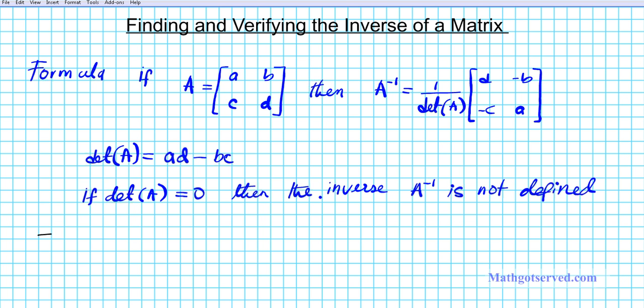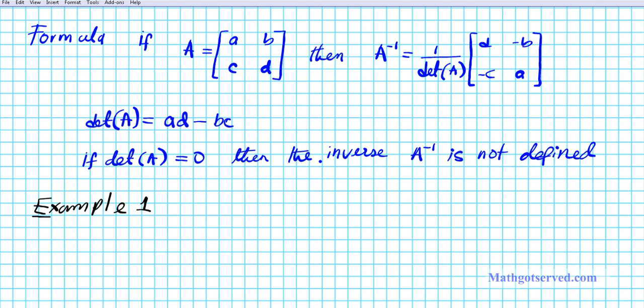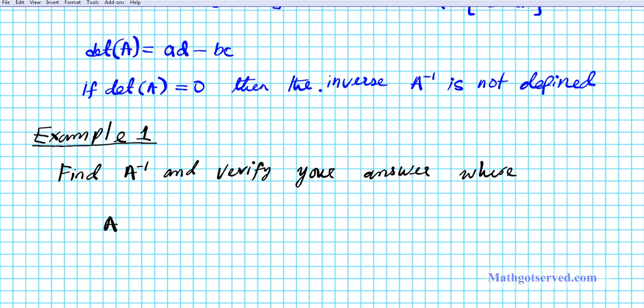Now let's go ahead and try example 1. So we are to find the inverse and verify that our answer is correct. So find the inverse A to the negative 1 and verify your answer where our matrix A is equal to 2, 1, 4, 3. So there goes your matrix A.